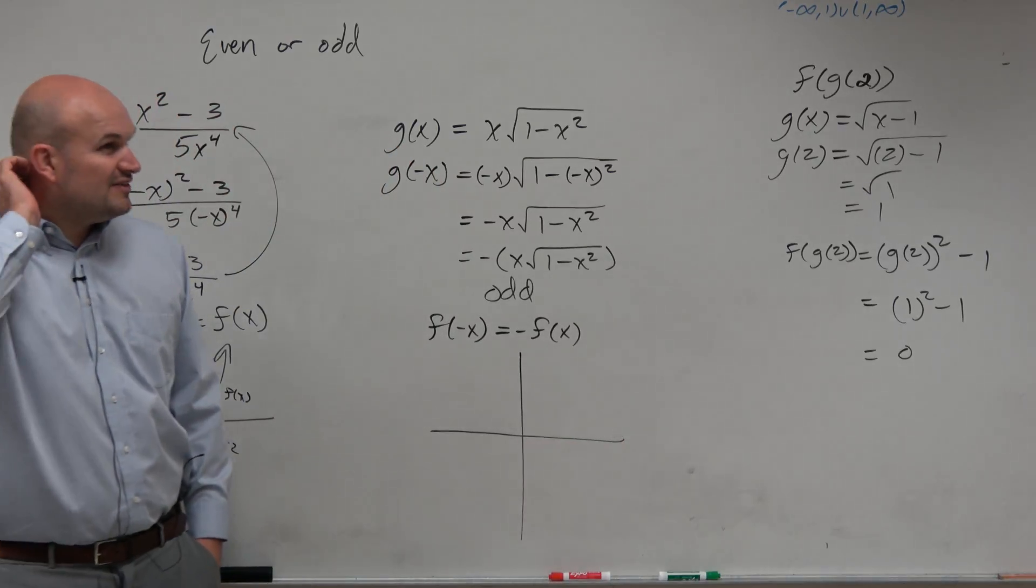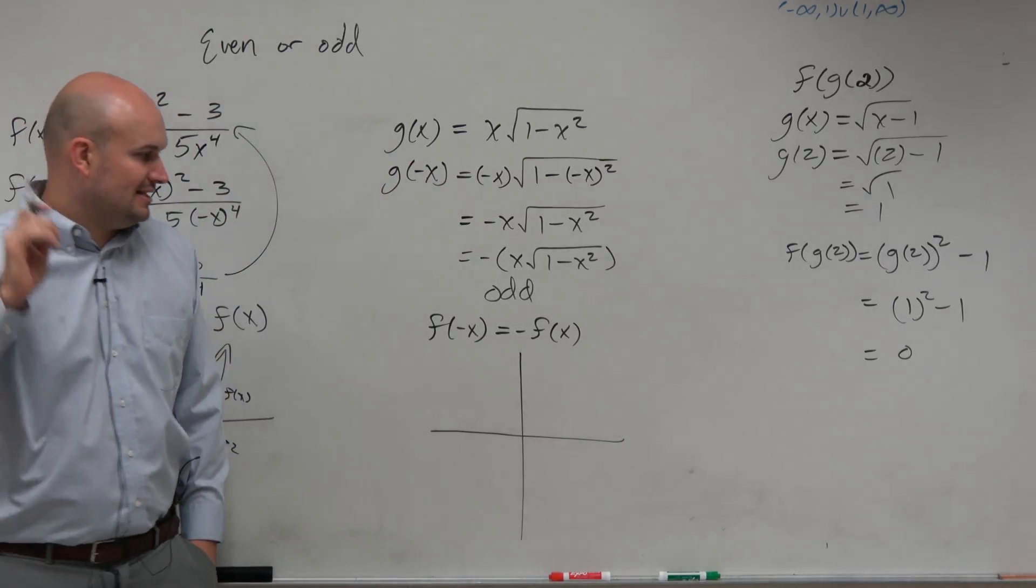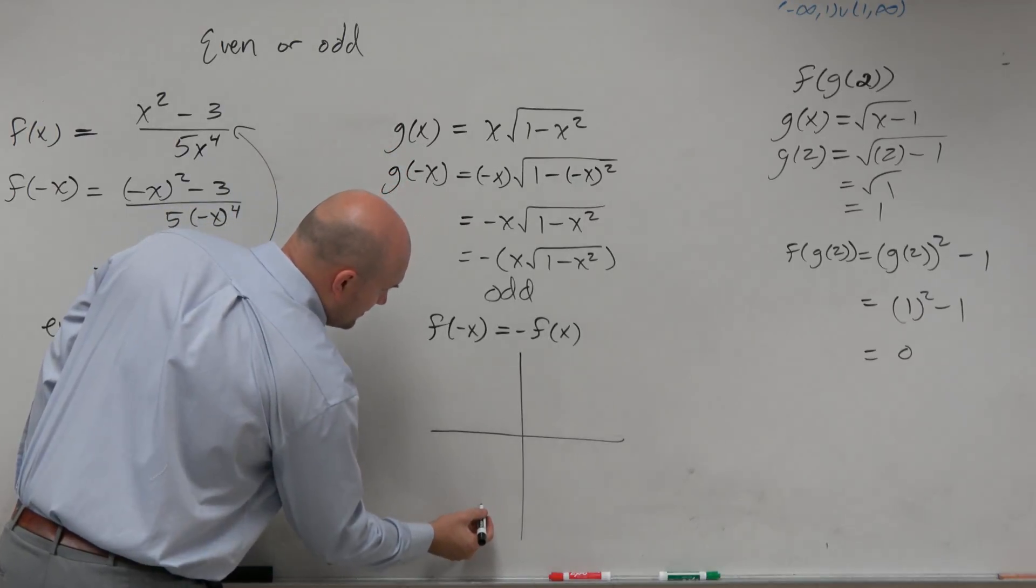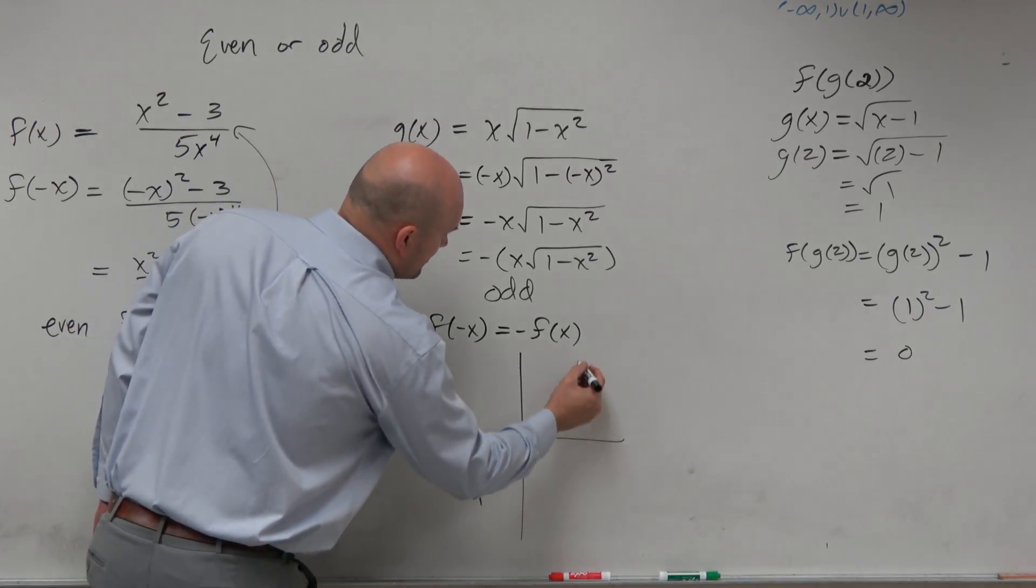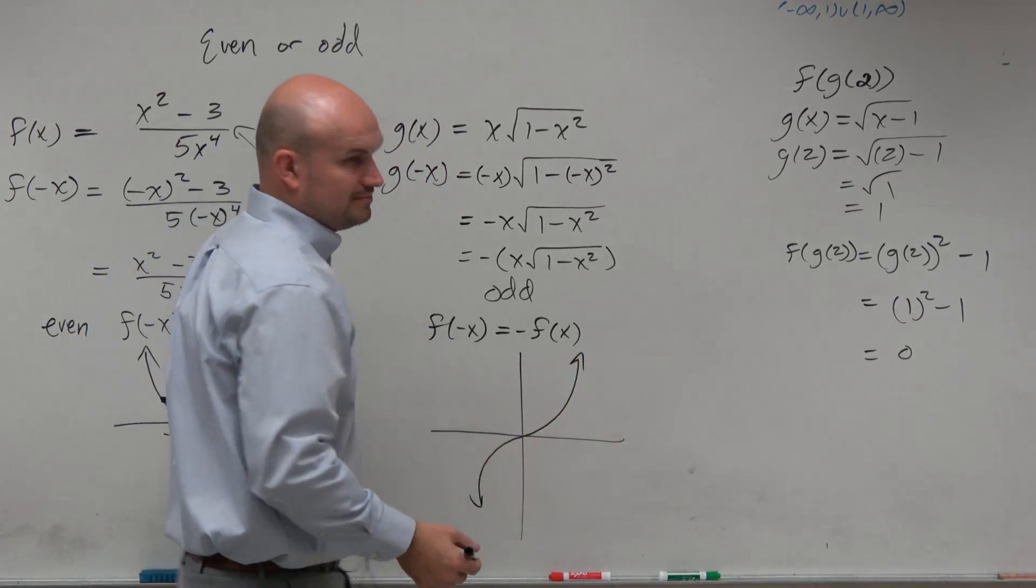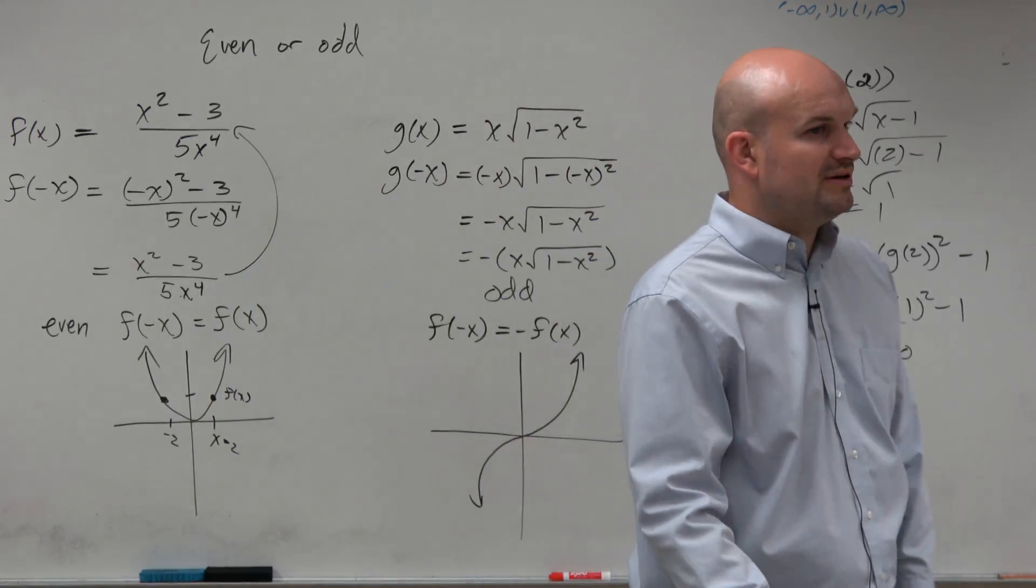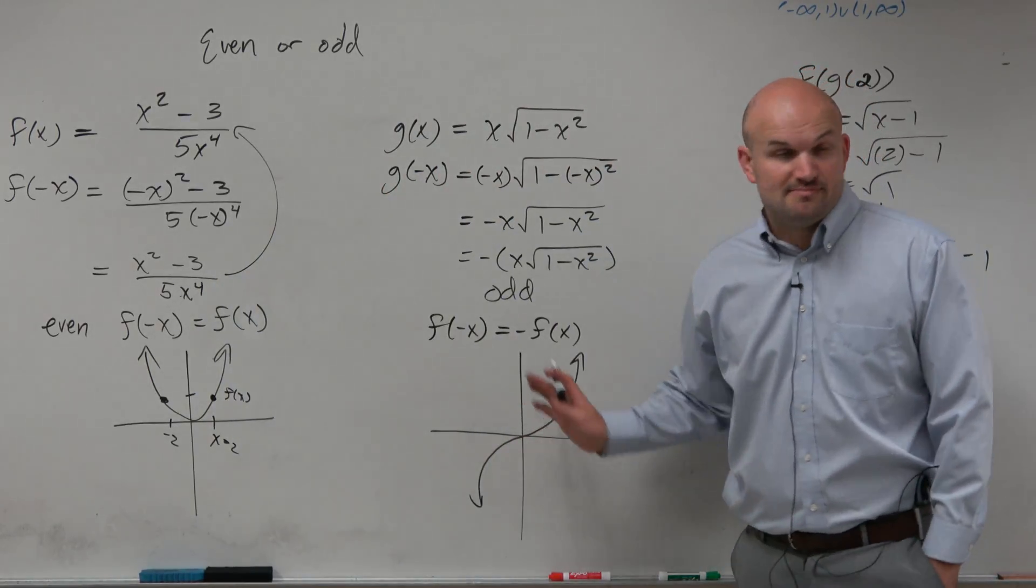Let's pick a very easy function that would be odd. Let's pick cubing, the cubic function. That is an odd function. It's symmetrical about the origin.